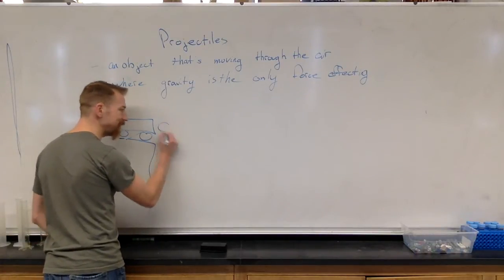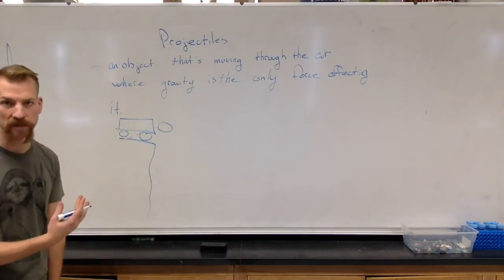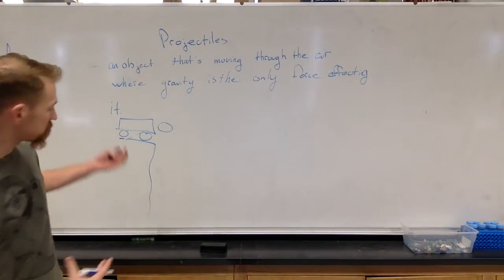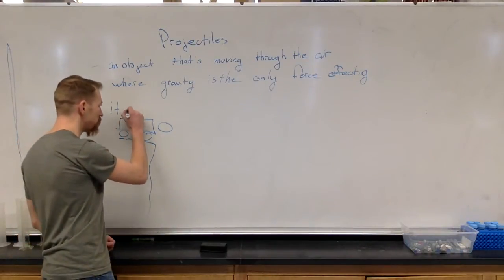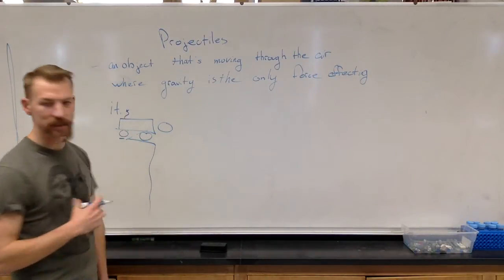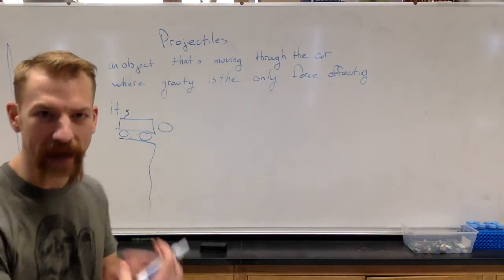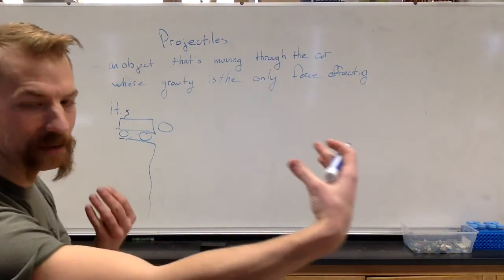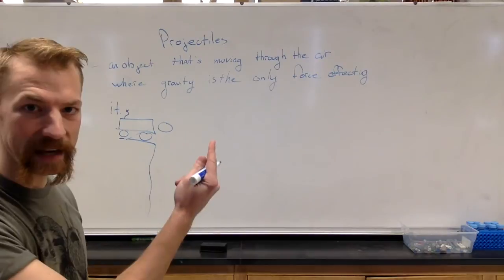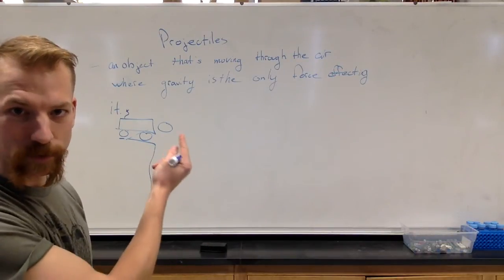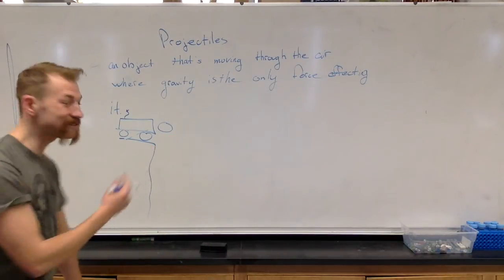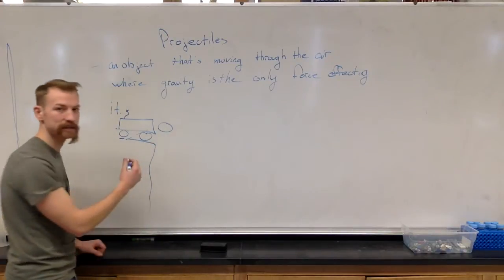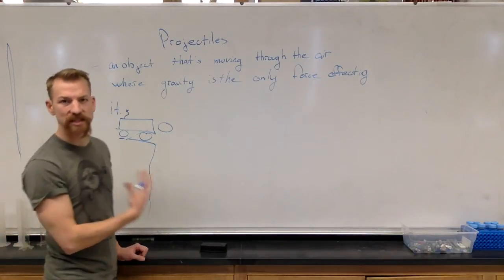Once the cannonball leaves the cannon, it becomes a projectile. When it's still in the cannon, there's all those explosive gases from when the cannon was ignited putting a force outward on the cannonball. But once it actually leaves that cannon right here, this is now a projectile, and it moves in a very specific way.